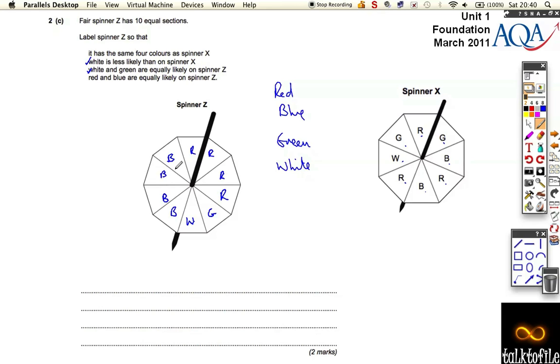So you've got to have, if it's less likely to come up on white, there's only one white section. If it's green, it's going to be the same, because it says white and green are equally the same. That leaves us with eight left to split between the two of those. So we're going to have four and four. So getting the green and white correct is fine. And then filling up the others with the red and blue is going to get your second mark.